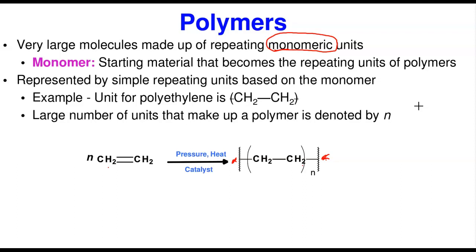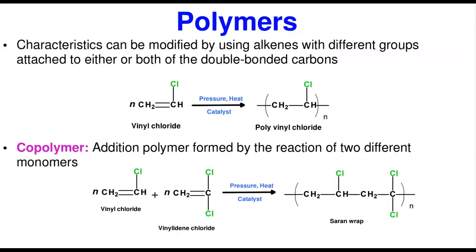Addition polymers can be modified by attaching different groups to the alkene itself, depending on the type of polymer and the characteristics you want. This attachment must be on the double bond, because it is the ability of the alkene to have a double bond that enables it to undergo polymerization.